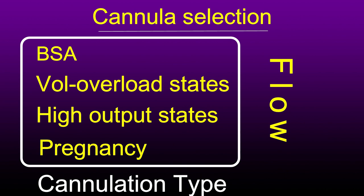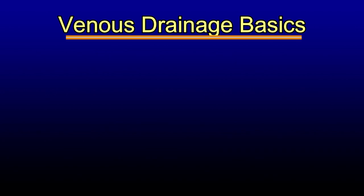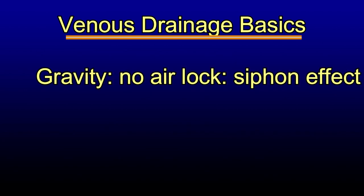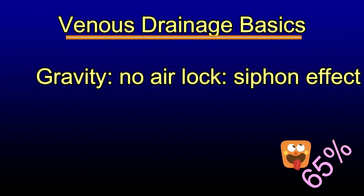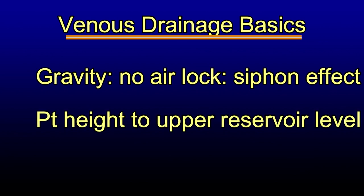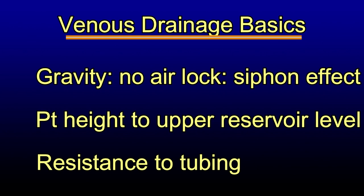The standard and most appropriate approach is central bicaval cannulation with caval snares, which gives total cardiopulmonary bypass and good venous return to the reservoir. Gravity plays an important role — so-called siphonage — so one must ensure there is no airlock in the circuit, or there will be obstruction to blood flow within the venous line. Sixty percent of the circulation is within the venous system, 30% in the arterial system, and 5% in the arterioles. Patient height relative to the reservoir level is very important for adequate emptying of the heart. Always keep the tubing short to minimize resistance per Poiseuille's law.